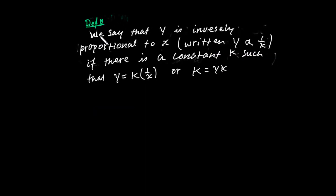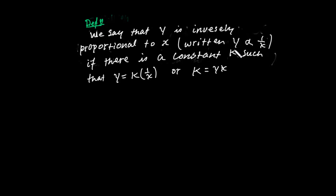The definition in English for inverse proportionality: when we have indirect proportionality, we say that y is inversely proportional to x, written as y is proportional to 1 over x. y is inversely proportional to x if there exists a constant number k such that y equals k times 1 over x, or equivalently, k equals y times x.